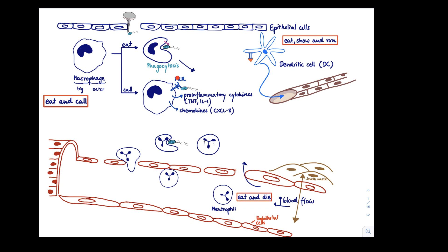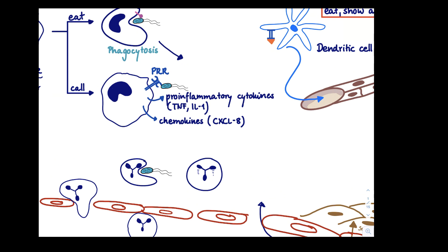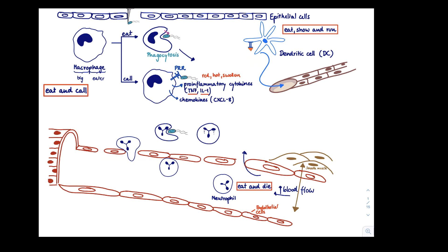What the macrophage does is eating up stuff but also calling for help — calling its local friends from the nearby blood vessel. It eats up stuff through a process called phagocytosis. There are receptors on the surface of the macrophage that can recognize pathogens and then initiate phagocytosis — these are called phagocytic receptors. Now, how does a macrophage detect that there's something going on? The macrophage is equipped with so-called pathogen recognition receptors, abbreviated as PRRs.